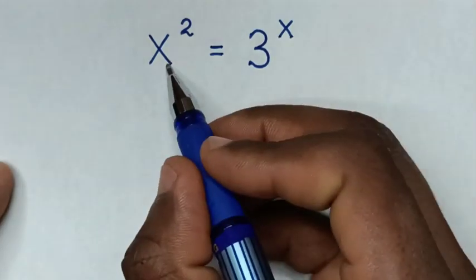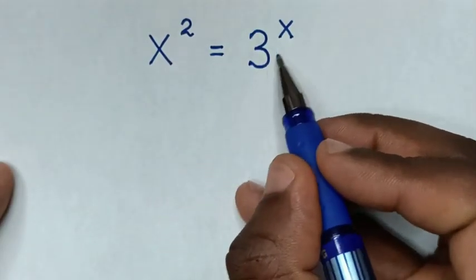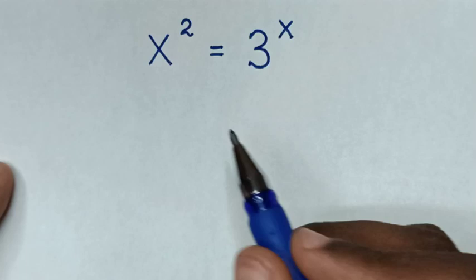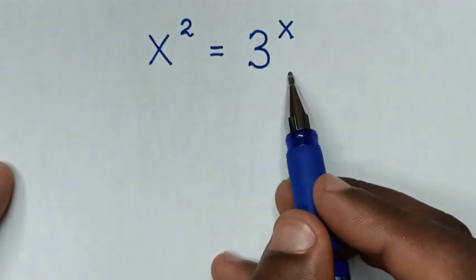Hello! How to solve x squared is equal to 3 to the power of x to find the value of x from this equation.